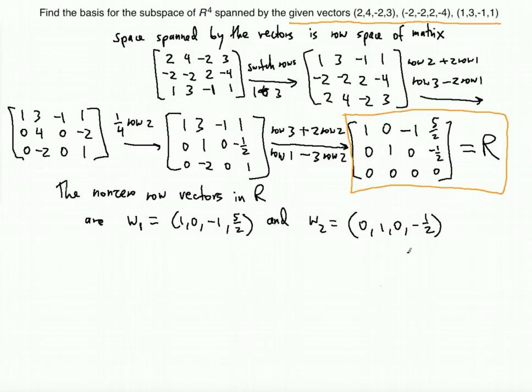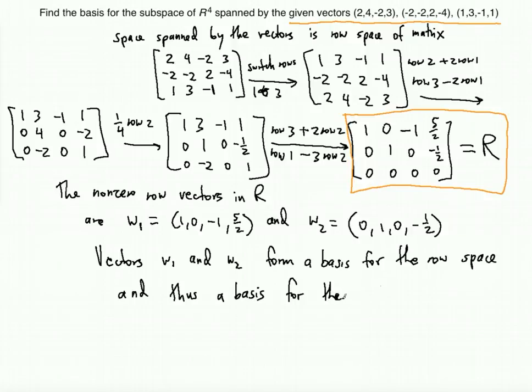So what it tells us is that vectors w1 and w2 form a basis for the row space and thus a basis for the subspace in the fourth dimensional space spanned by the given